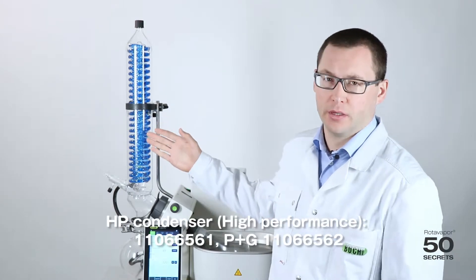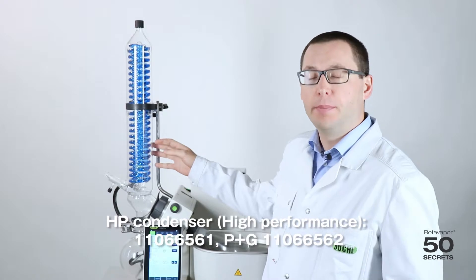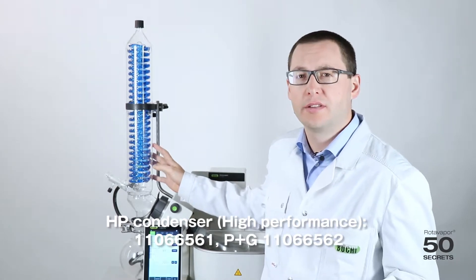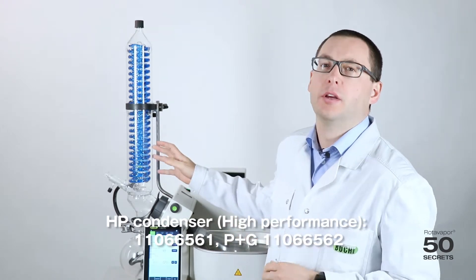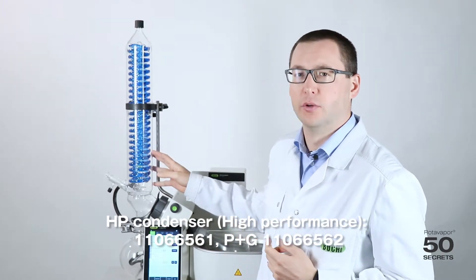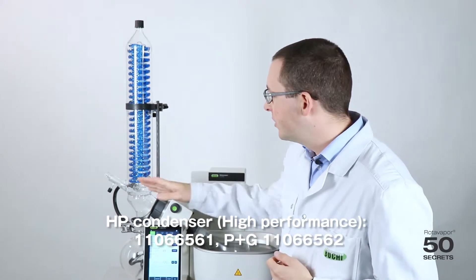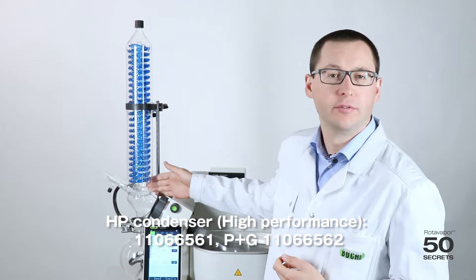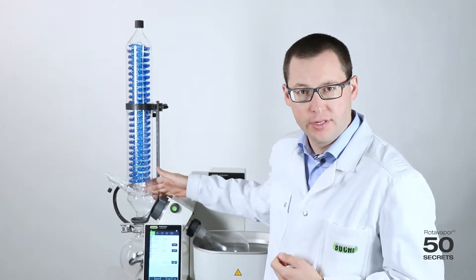This is the HP condenser, the big brother of the V condenser. It basically has double the cooling capacity and when you increase the delta T of the complete system you can increase the distillation performance. Otherwise it's exactly the same as the V condenser. It's compatible with the foam sensor, compatible with the autodesk sensor and the vapor temperature sensor.